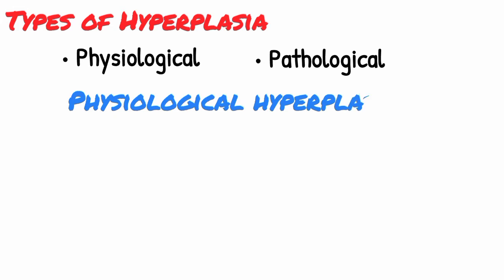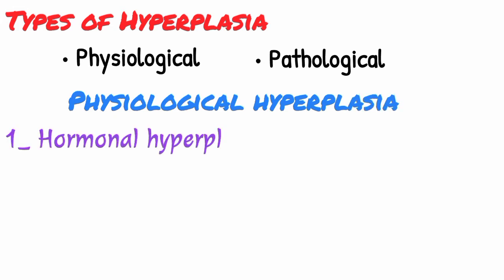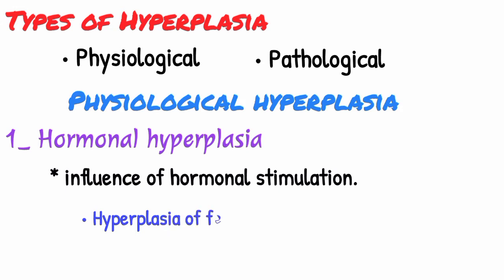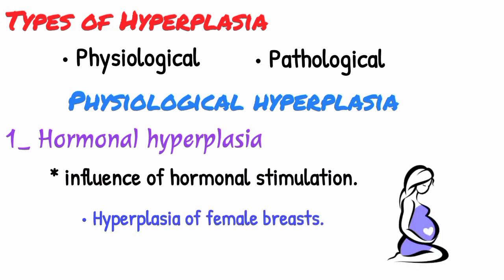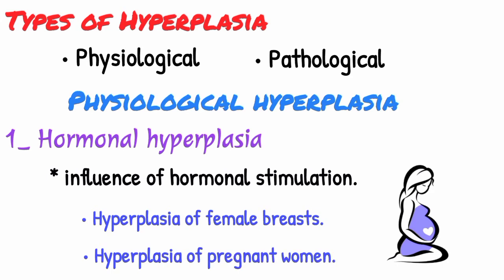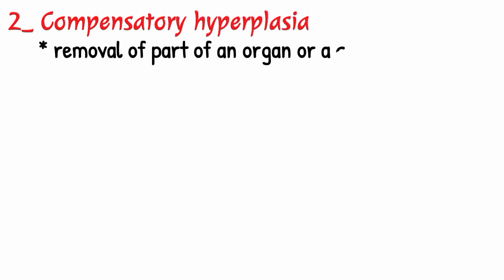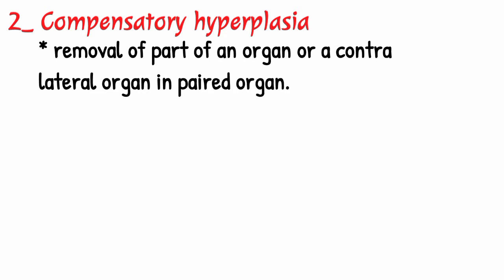Physiological hyperplasia can be further divided into two main types. The first one is hormonal hyperplasia, which occurs under the influence of hormonal stimulation — for example, hyperplasia of female breast at puberty, during pregnancy and lactation, and hyperplasia of pregnant women. The second one is compensatory hyperplasia, which occurs following the removal of part of an organ, or a contralateral organ in a paired organ.